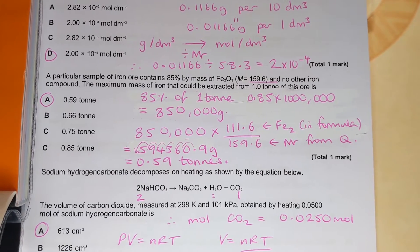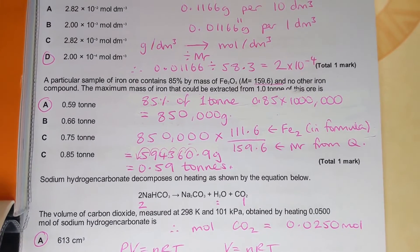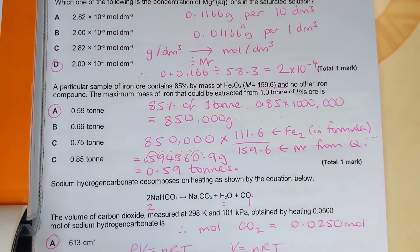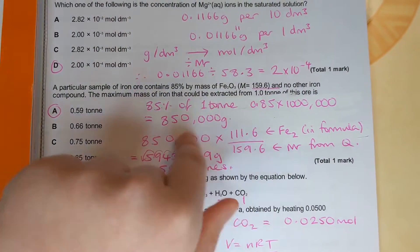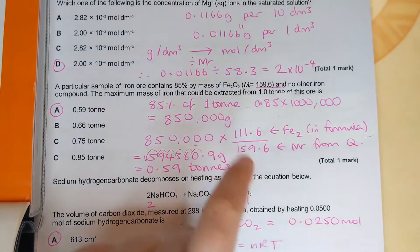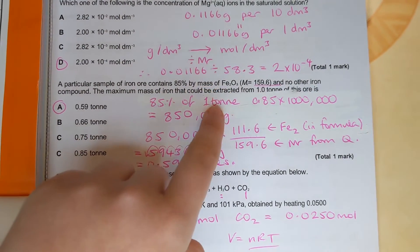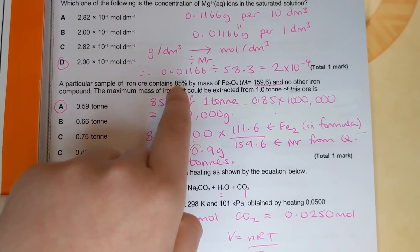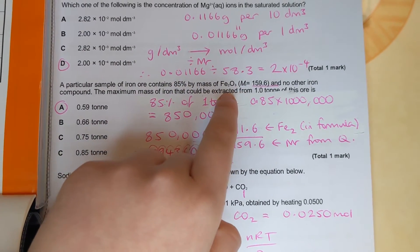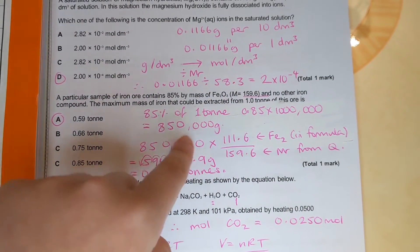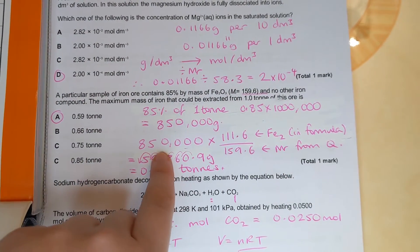The way I've done it, after a little bit of scribbling out, you can see I've used a tipex mouse there. The first thing I did was 85 of one ton because it says 85 by mass and we're extracting from one ton and I came out with a mass in grams. The next thing I did...